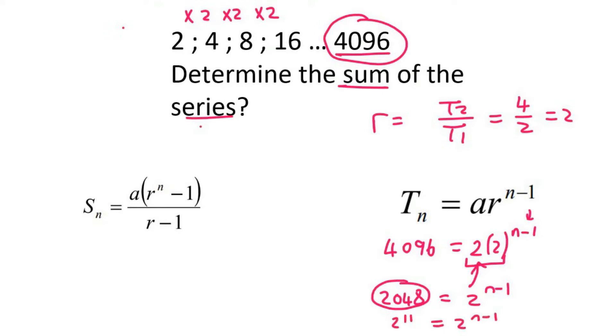Now the 2's cancel out, so we can cancel those out. And so we have n minus 1 equals 11. If you solve for n, you get 12. That means that this 4096 is at position 12. But because it's the last term in the sequence, it means we have 12 terms.